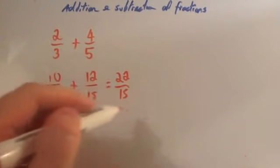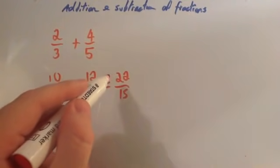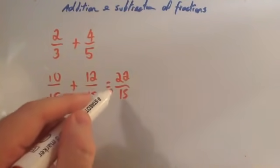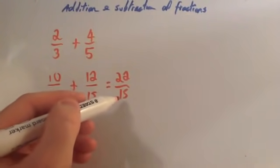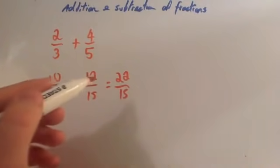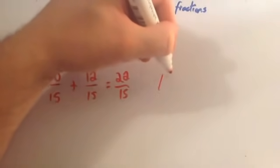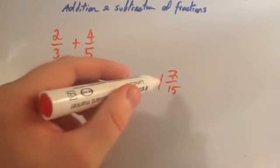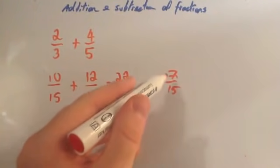Now, quite often the question will want you to write this as a mixed number. As you can see, this is a top-heavy fraction — a top-heavy fraction is one where the number on the top line is bigger than the one on the bottom line. So we're going to write this as a mixed number. Remember the line means divide. How many fifteens go into twenty-two? It's one remainder seven. So the answer is one, the remainder seven goes on the top line, and fifteen stays on the bottom line. To see how to change from top-heavy fractions to mixed numbers, look at that video. So the answer is one and seven-fifteenths.